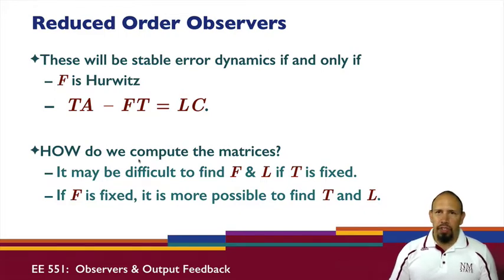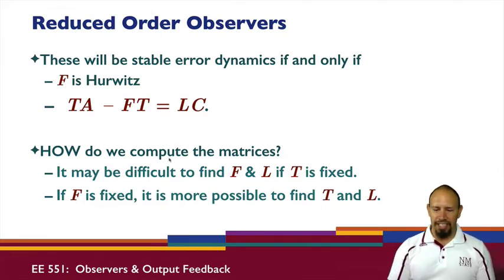How do we compute these matrices? It may be difficult in general to find F and L if T is fixed. If F is fixed however, it is simpler to find T and L. So it's important to ask the question, how do we actually compute these guys?